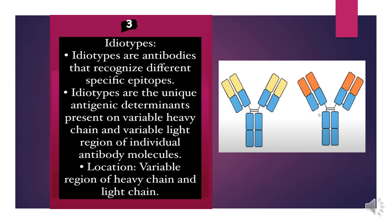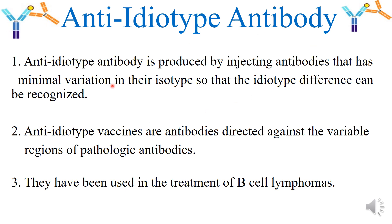The third and final type of antigenic determinant is the idiotype. Idiotypes are antibodies that recognize different specific epitopes. These are unique antigenic determinants present on the variable heavy chain and variable light chain region of individual antibody molecules. Anti-idiotype antibodies are produced by injecting antibodies with minimal variation in isotype so that the idiotype difference can be recognized. Anti-idiotype vaccines are antibodies directed against the variable region of pathological antibodies and have been used in the treatment of B-cell lymphomas.